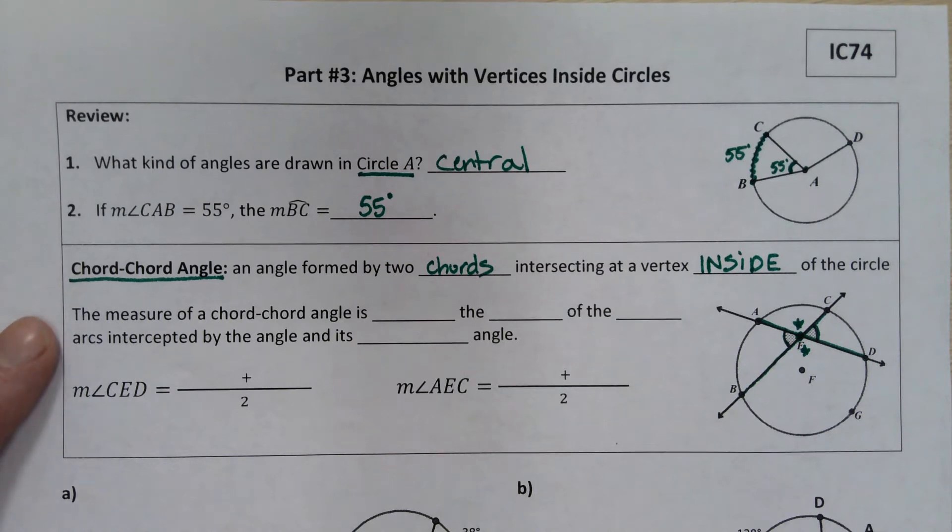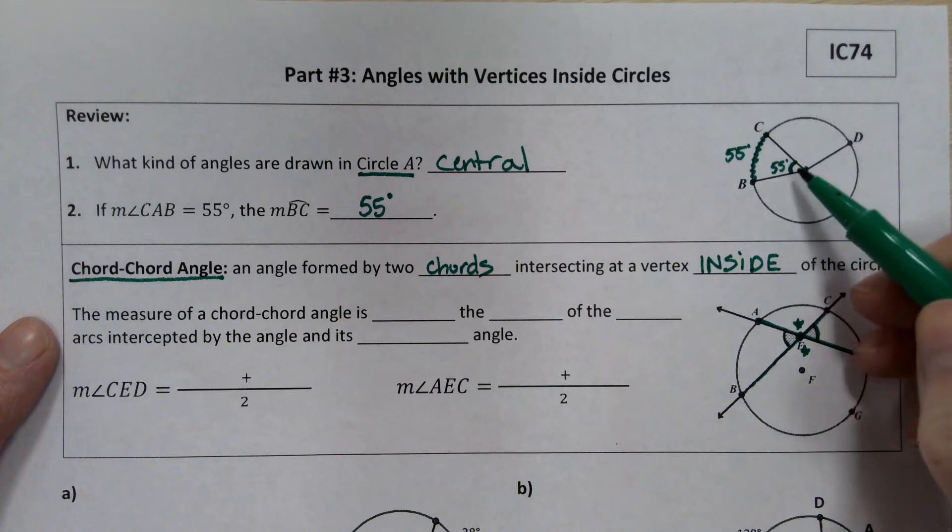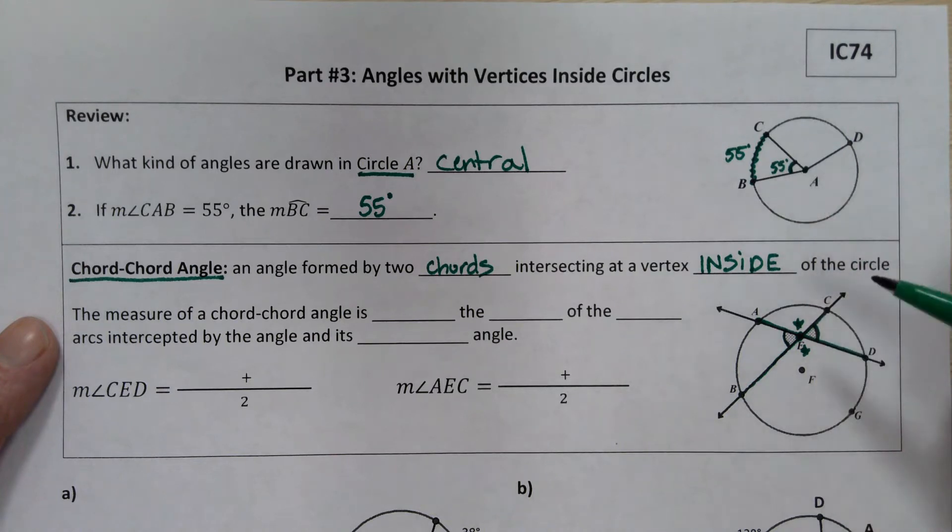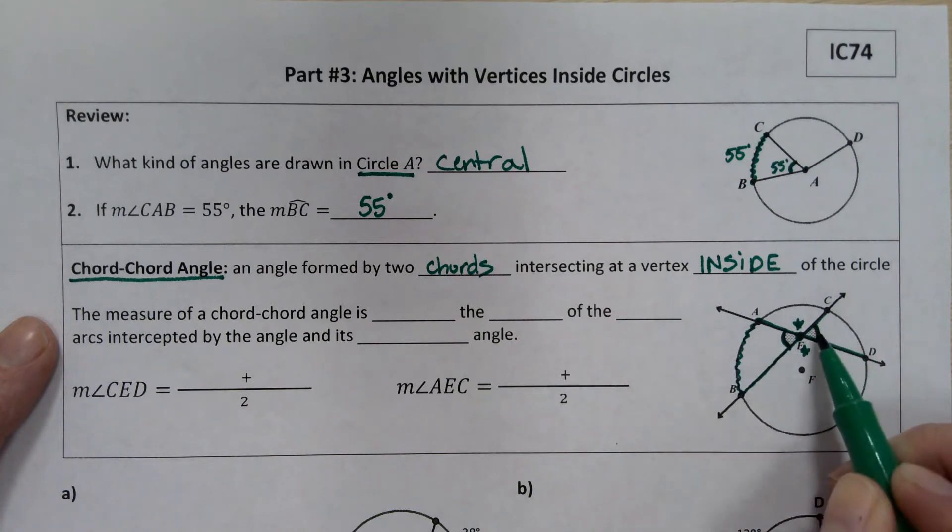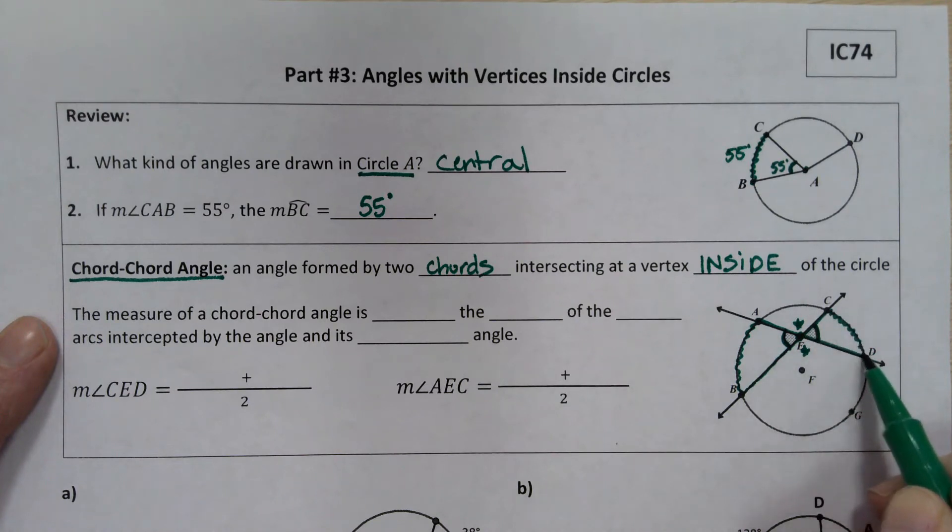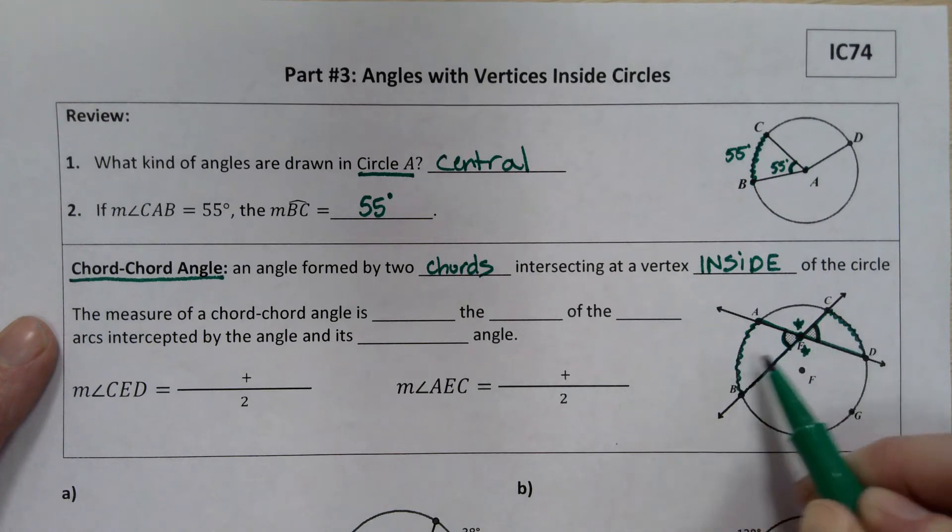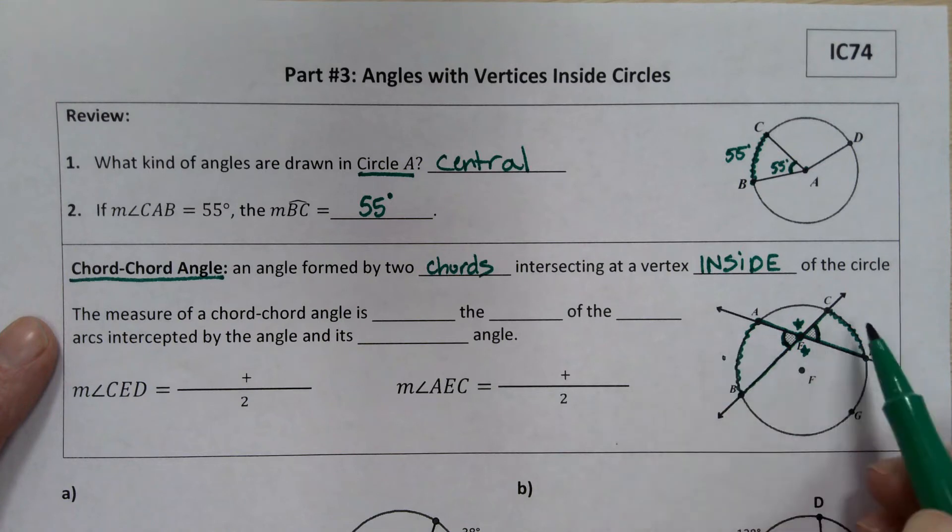The measurement of these chord-chord angles is a little bit more complicated than the measurement of central angles. Since these two angles are vertical, we know they have to be congruent. But if we travel out to the intercepted arc for this angle on the left, it's AB. And if we travel out to the intercepted arc for this angle on the right, it's arc CD. Now there's no guarantee that these arcs are exactly the same measure, but we know that these angles have to be the same measure since they're vertical.